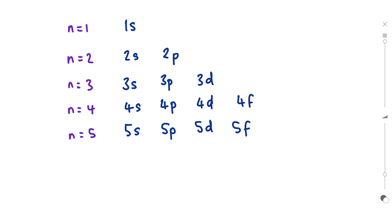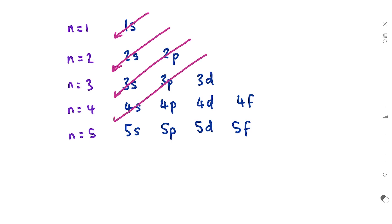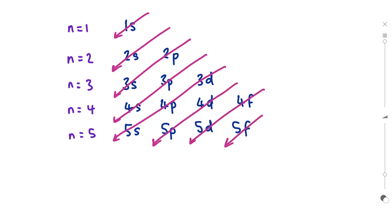Now I'm changing color and I'm going to show you what you need to do next. You need to write arrows onto this diagram. Be very specific how you draw these arrows — they need to be diagonal going from right to left. This is essential, which is why it's essential that you've lined up everything perfectly. And this will show you the order that you fill.